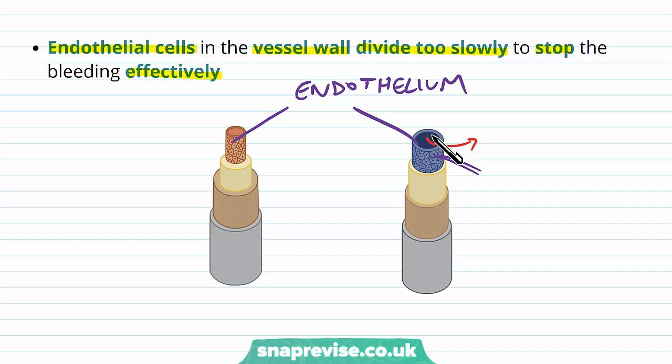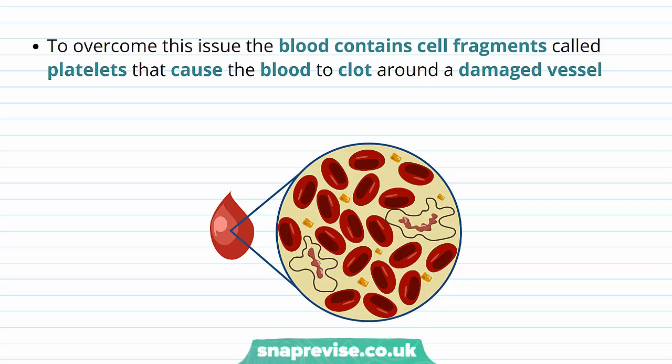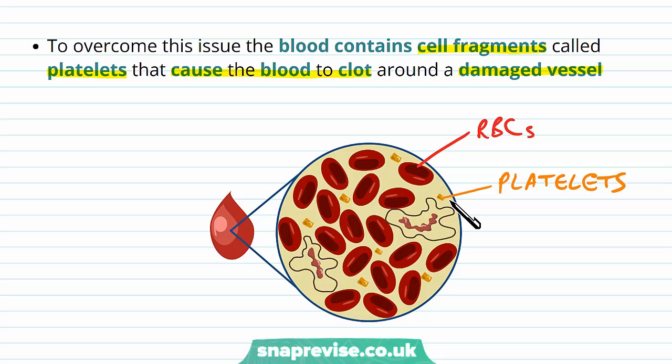To overcome this, the blood has something else which can save a damaged vessel. Cell fragments are found in the plasma of the blood — not complete cells, but fragments of cytoplasm — and they're called platelets. These cause the blood to clot around the damaged part of the vessel. They're made continuously, are fragments of cells with some cytoplasm, some organelles, and a little bit of material, and they float around in the plasma until they're required. It's these that contribute to the clots which form to save the vessel from continuously leaking.